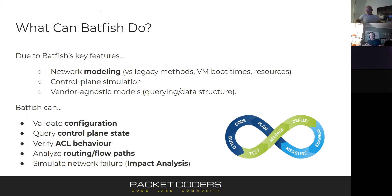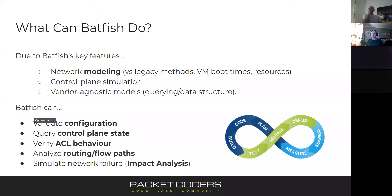With routing and flow paths, it's not just checking if one server can reach another — you can ask whether all servers throughout the network can reach all other servers across all ports and protocols in a single question. This lends itself really well to CI pipelines because Batfish is lightweight, quick, and doesn't require direct access to the network.